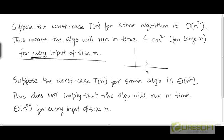This follows from a plot we looked at previously where we represented the running times for different inputs of size n on the same plot, getting a cluster of points. The worst case running time is the function connecting the topmost points for all values of n. Similarly, the best case running time connects the bottom-most running times, and the average case connects the averages computed according to a probability distribution indicating how likely different inputs of size n are.